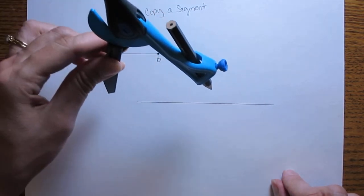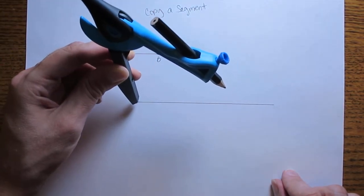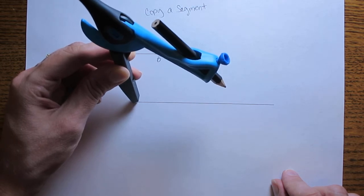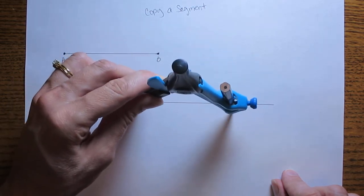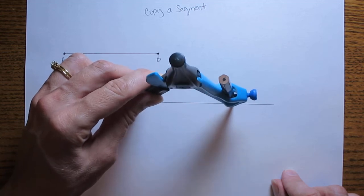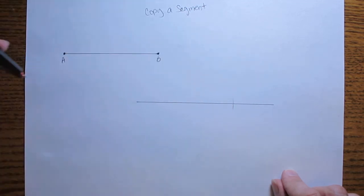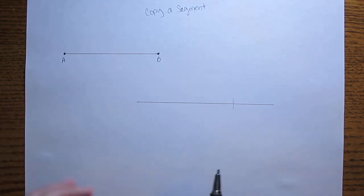Then take that compass at the same width, go to the new segment that you've just drawn, and put the pointer at one endpoint. Make a mark on your segment. That marks the same distance that you started with on the original segment.